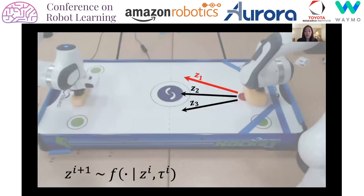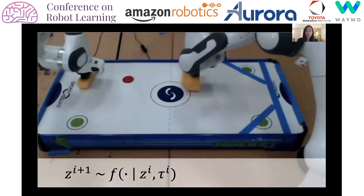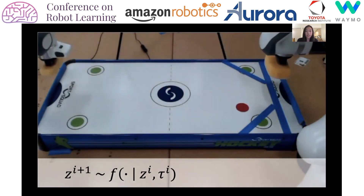After a trial, the other agent selects a new strategy based on the previous interaction. Specifically, it aims away from where the robot last blocked. Importantly, the robot never observes the other agent's strategies.